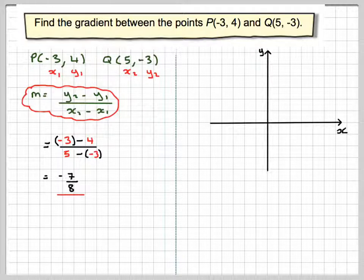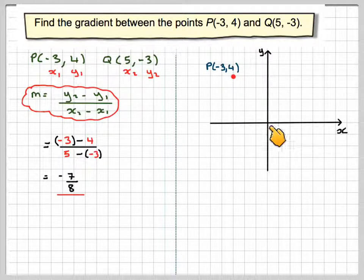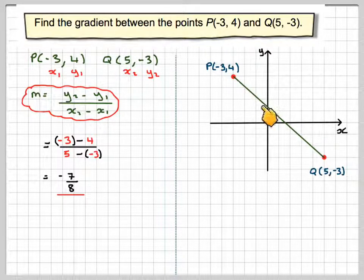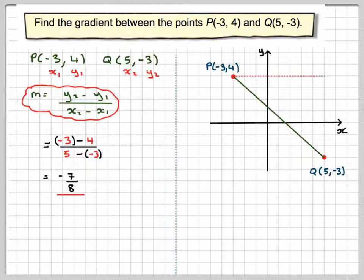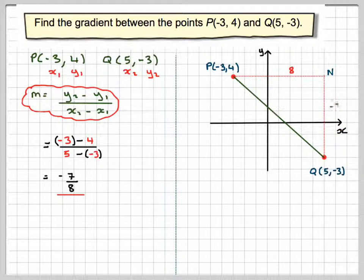So what does that actually mean? If we draw our set of axes and plot the first point, minus 3 across and up 4 — that point there. The other point is 5 along and 3 down. Joining them up, we see the line slopes the other way. Drawing the triangle in, we can see this is 8 along, but because it's going downwards we say it is minus 7. That's why the gradient is minus 7 over 8 — a slope in that direction is negative.